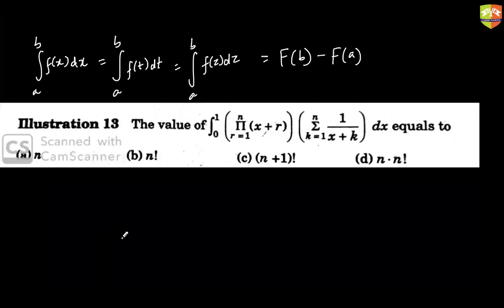Next question: find the value of the integral from 0 to 1 of [∏(x+r) for r=1 to n] × [∑(1/(x+k)) for k=1 to n] dx. Students are given about one to two minutes to solve this.